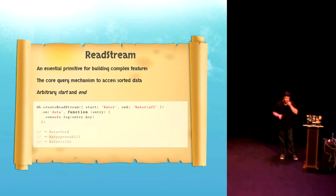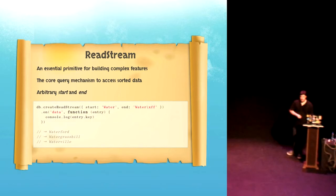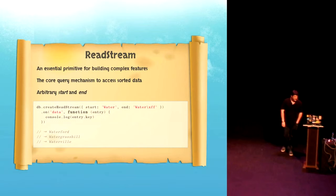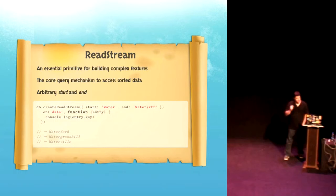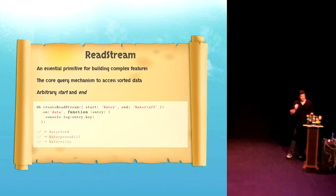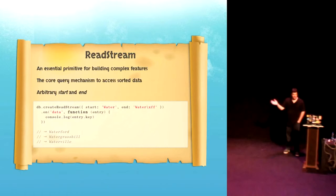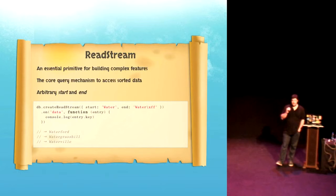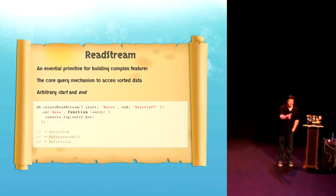So if I've got time, I just want to quickly talk about this ReadStream because it's one of the key primitives of LevelUp. So ReadStream, it's an essential primitive for building complex features because if we just had get and put, then it's difficult to build things that are useful. So it's a query mechanism. We can access our sorted data with it. And it has arbitrary start and end value. So you can start at the beginning and end at the end of the data store. You can stream the whole lot of it. Or you can start at any point in the database and end at any point. And the point that you start doesn't even have to exist. So you can target it at some key that you think might exist or a partial prefix of a key, and it'll jump to the next one. So it's a really useful mechanism for finding data and for guessing ranges.